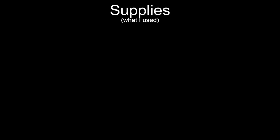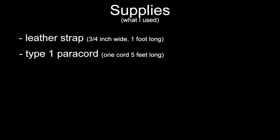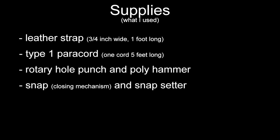As far as the supplies go, many of the tools used in this tutorial can be substituted with another tool that does an equally good job. You're going to need a leather strap - in my case it was 3/4 of an inch wide and a foot long. You're going to need a piece of paracord, I used type 1 paracord, about 5 feet of it. You're also going to need a hole punch as well as a hammer in order to make the holes for the snap as well as for the center braid. You can substitute a hole punch for a drill and get a similar result. You're also going to need a snap as well as a snap setter. You can also use another type of closing mechanism for your bracelet, for example a screw stud or anything that works for you.